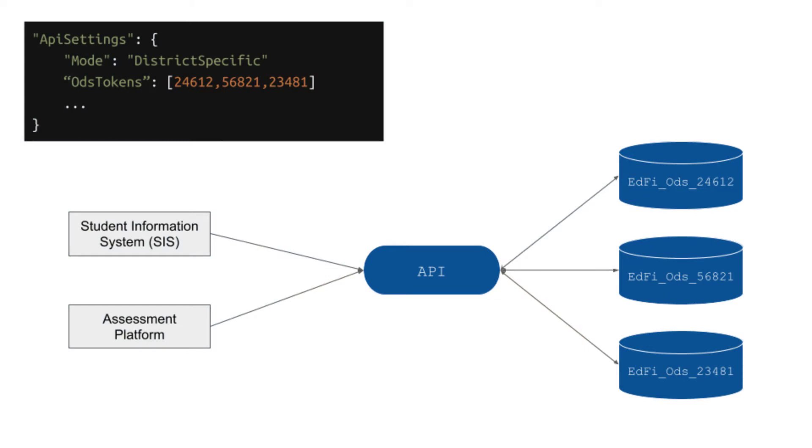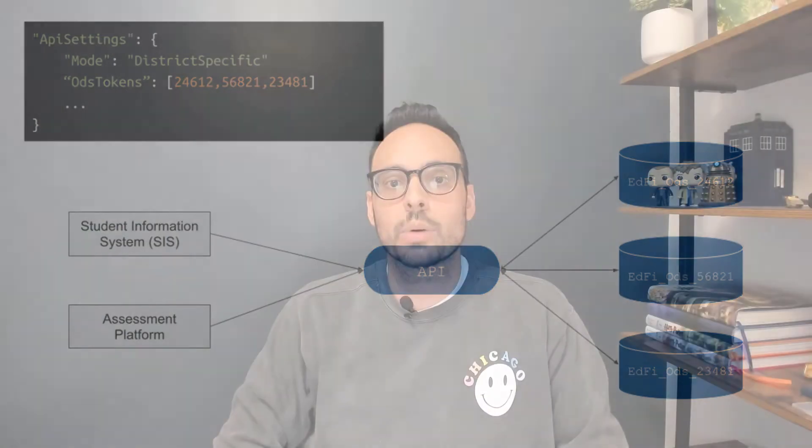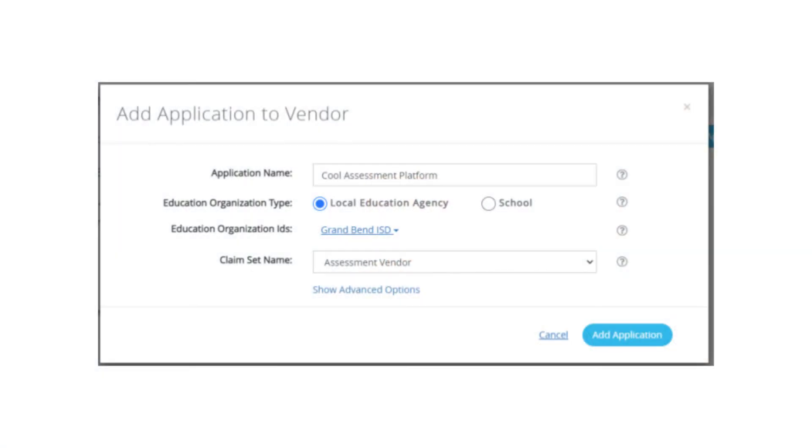District Specific is used when you are dealing with data for many LEAs and you want an ODS per LEA. When you create an application in the EdFi Admin app, you associate the application with one or more LEAs. District Specific requires an application to only be associated with a single LEA and will use that association to determine which ODS to interface with.